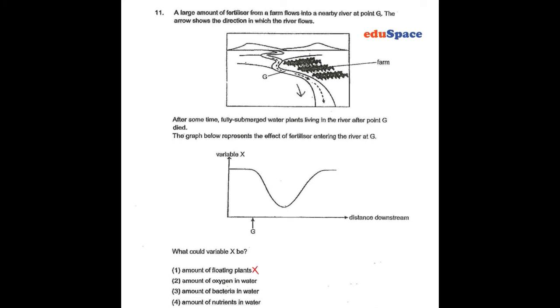So this is wrong. The amount of oxygen in water—sorry—if it drops, that will cause the water plants to die. So in this case, the answer should be number 2.